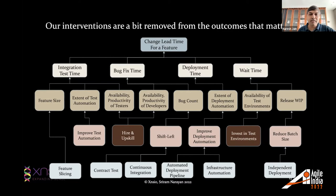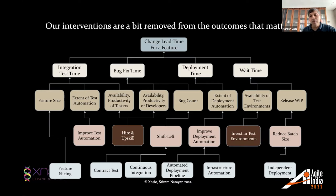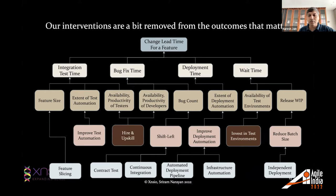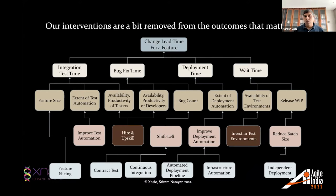When you start looking at each of these factors, you could think about what you can do to improve them. You could say: I need an initiative to shift left things, or invest more in test automation, hire and upskill people, reduce my batch size, or invest in better test environments — fully automated ephemeral environments, et cetera. So you can add the last layer of this contribution tree in terms of practices you could introduce to influence it. I hope everyone's with me on how you start thinking about any metric and breaking it down into its contribution tree.